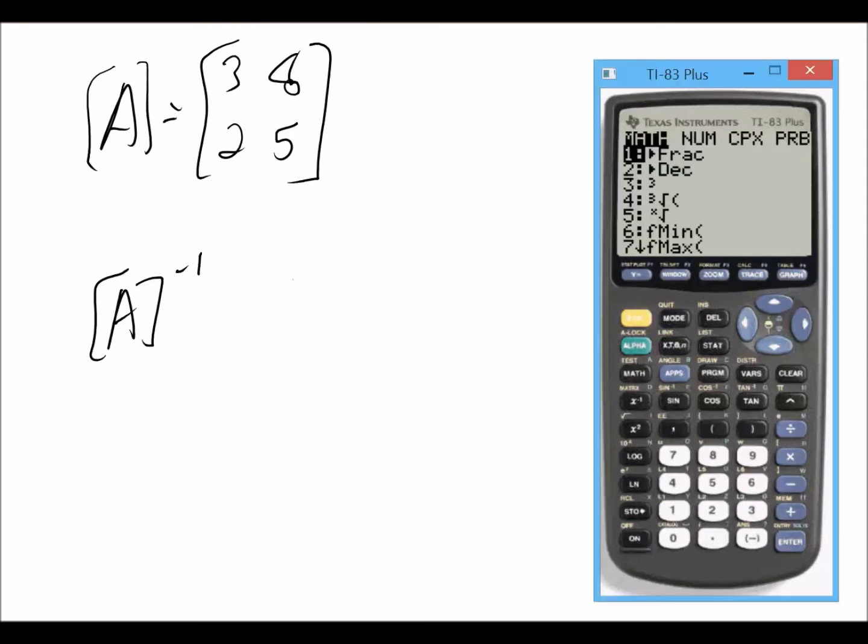So first we've got to input the matrix under second matrix, edit. We want a 2 by 2. We're going to enter 3, 8, 2, and 5. Then we're going to hit quit.